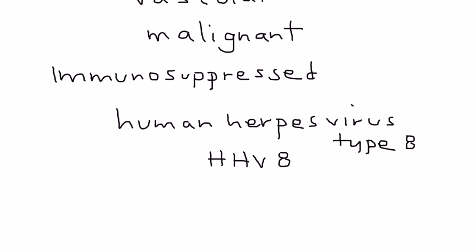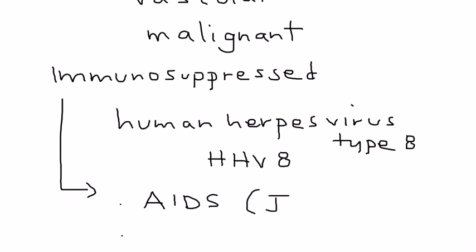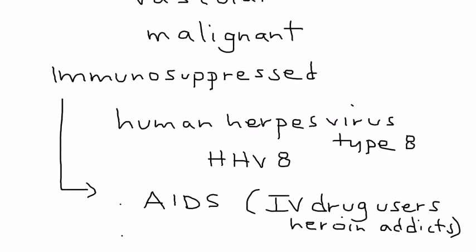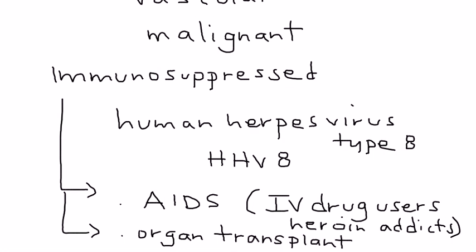When we say immunosuppressed patients, we're talking very commonly about AIDS patients who have a very low immune system, and also patients who are at risk of developing HIV and AIDS — for example, IV drug users such as heroin addicts. Another category of immunosuppressed patients are organ transplant recipients, whose immune system can be suppressed due to the medications they're on.